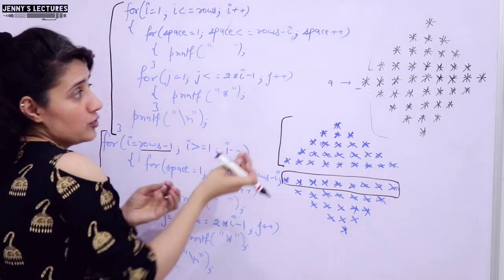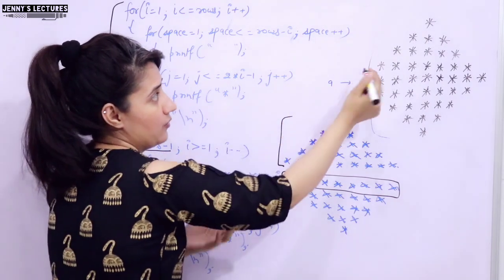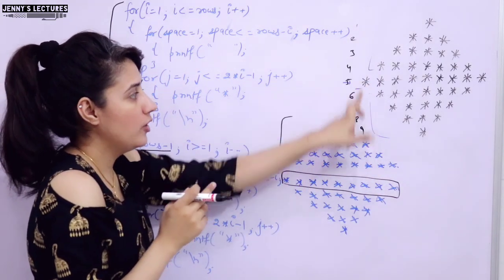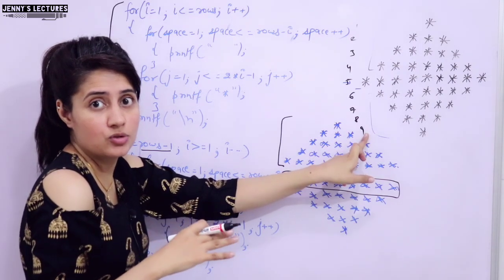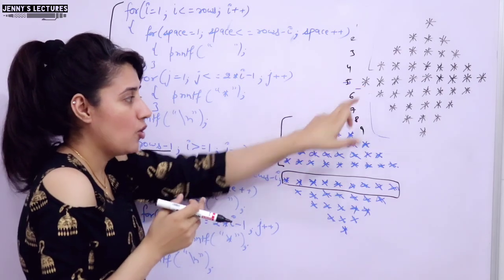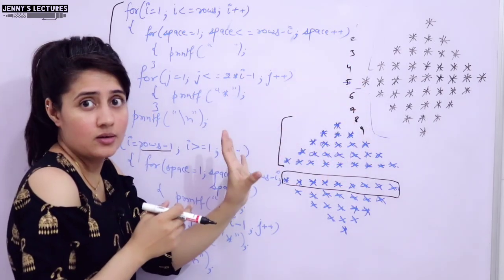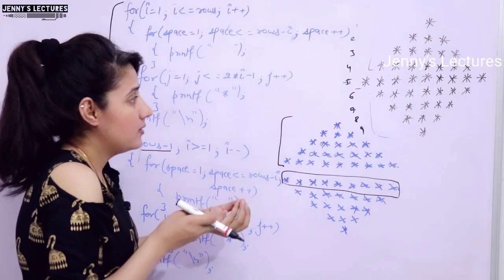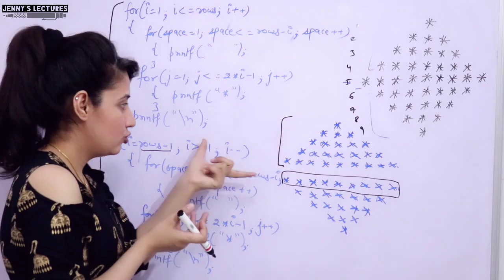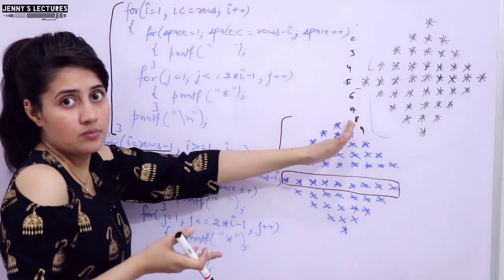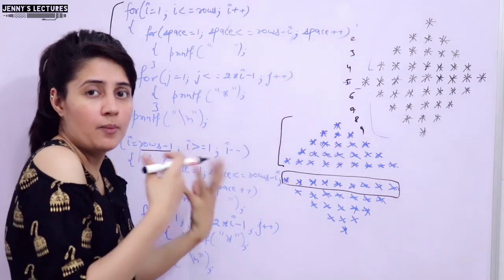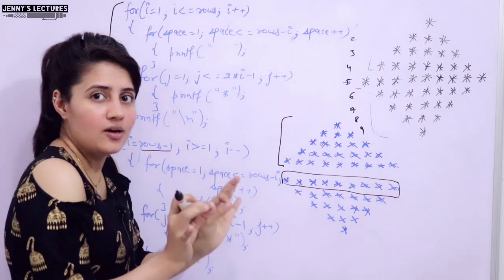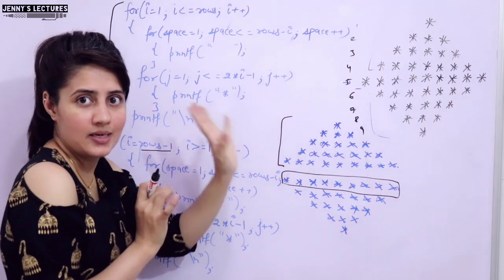Maybe you are thinking the outer loop should run from one to nine since we have nine rows total — and yes, that's what we discussed in previous videos. But you can also think differently: just a combination of the full pyramid and inverted full pyramid gives you this pattern. There can be multiple ways; maybe you can print it with the outer loop from one to nine using some more complex coding. I'm just discussing the simple, straightforward way here — just combining these two patterns.